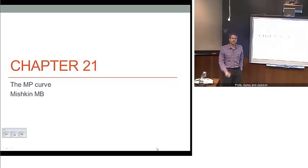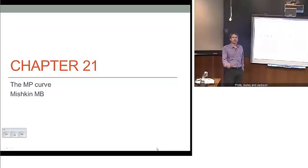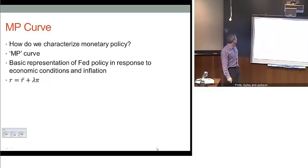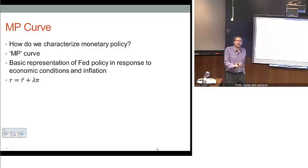We're going to look specifically at the MP curve, which tells us in a very simplistic way how monetary policy operates. The point of this chapter is to think about an easy way to characterize monetary policy through the so-called MP curve or monetary policy curve. What we'll see later is that it looks a lot like a more sophisticated Taylor rule type of setup, so this is a more simplified sort of Taylor rule.